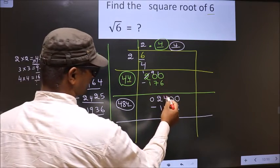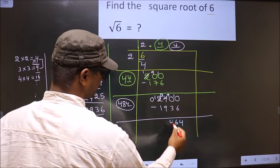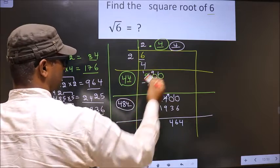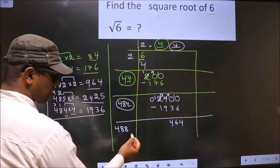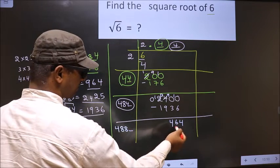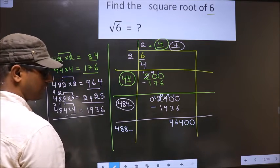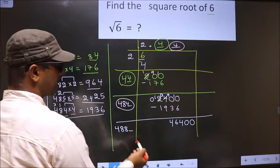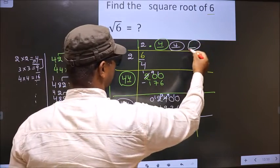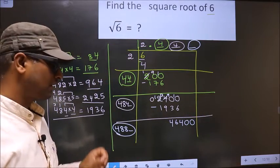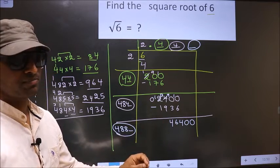Now subtract: 2400 minus 1936. That is 10 minus 6 is 4, 9 minus 3 is 6, 13 minus 9 is 4. Remainder is 464. Now add: 484 plus 4 is 488. Since we already have the decimal, directly take two zeros, giving 46400. Now I write a number here with the same condition as before.